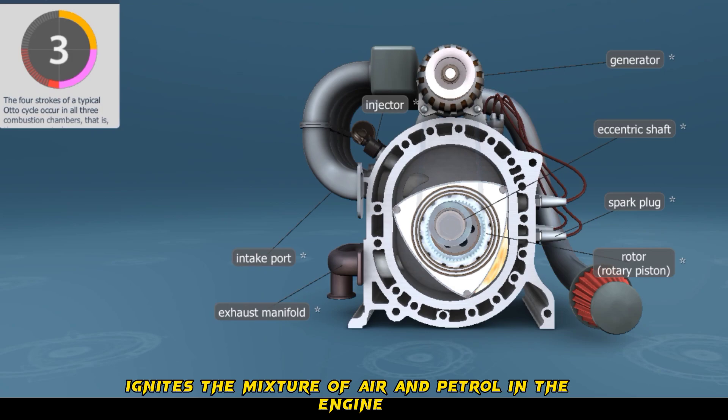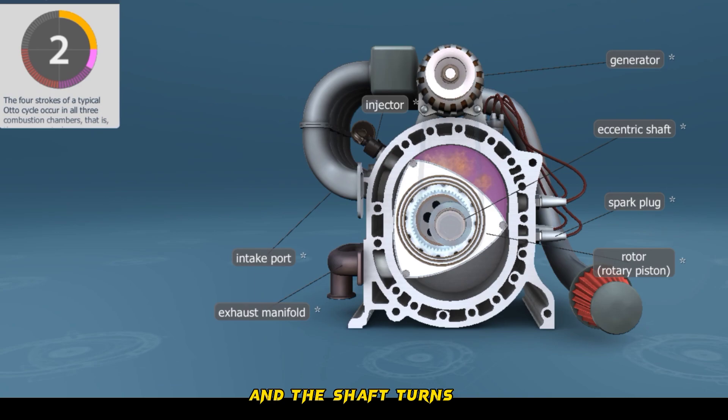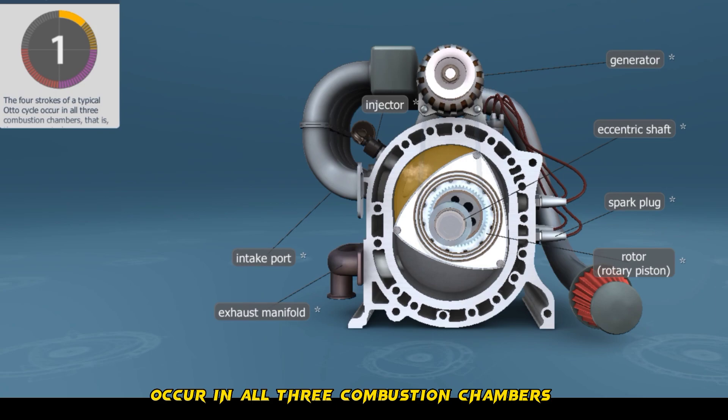The spark plug ignites the mixture of air and petrol in the engine. The explosion pushes the rotary piston and the shaft turns. The four strokes of a typical auto cycle occur in all three combustion chambers of the Wankel engine.